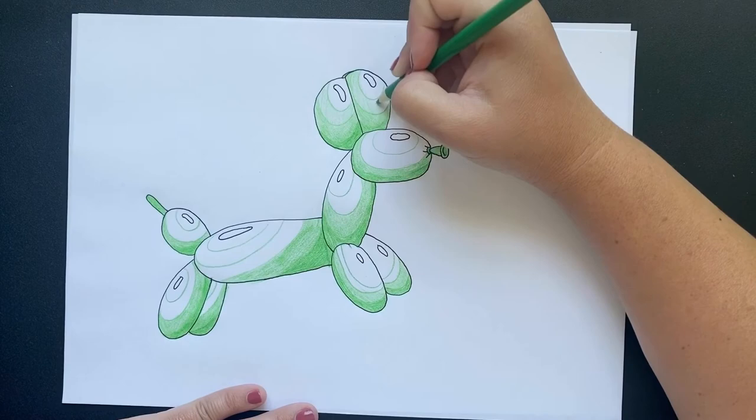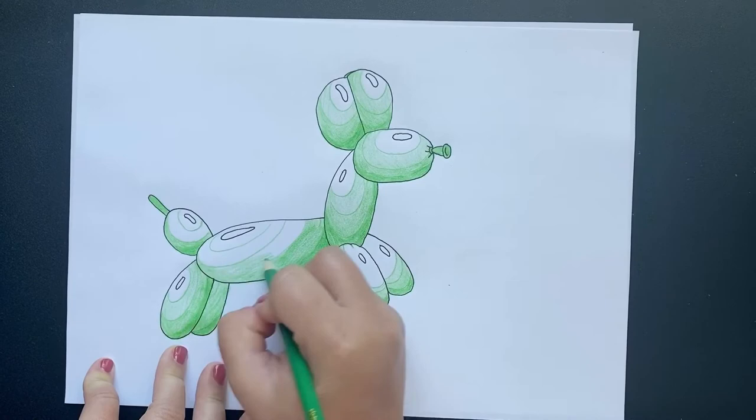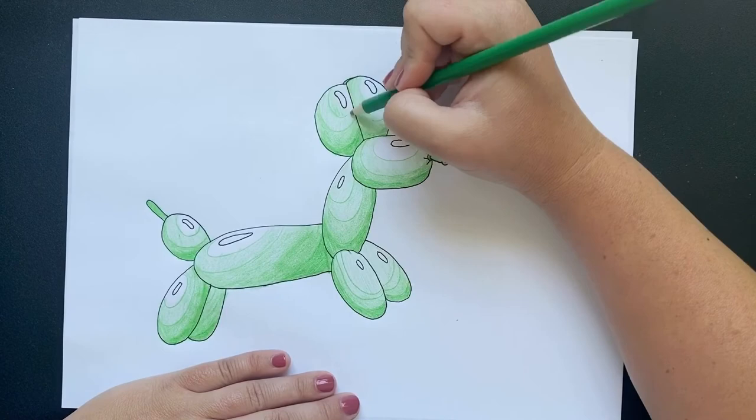Now, for the next ring, I'm going to be barely pushing down on my colored pencil. That's how I'm going to create the lighter color by barely pressing down. The closer you get to the highlight, the less you press down. That's how you're going to get your variation in your colors.